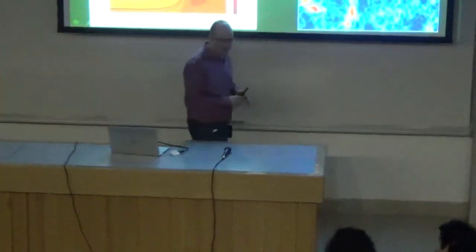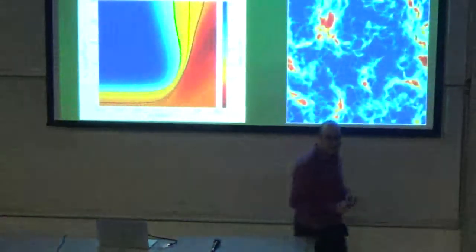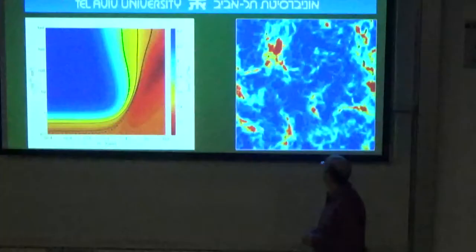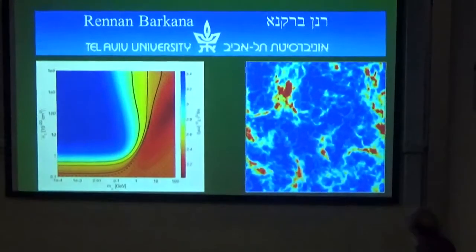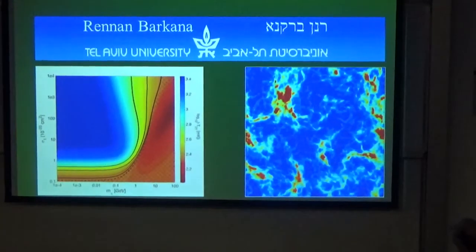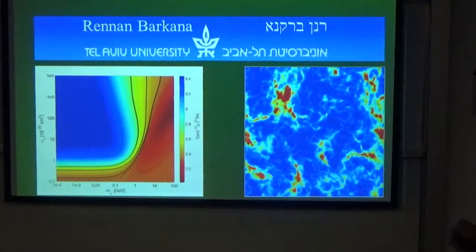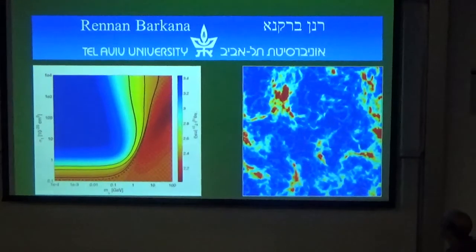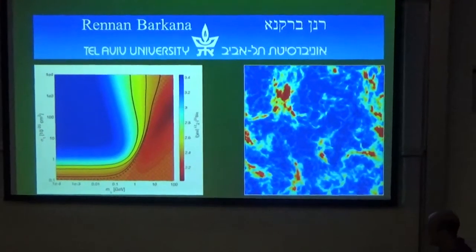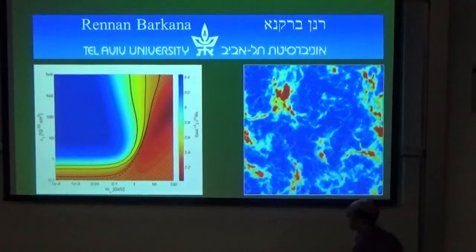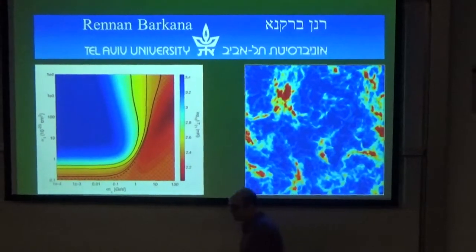He will tell us today about new types of searches for dark matter using 21cm signals. So today I will tell you about the possibility that maybe the dark matter has been revealed by searching for the first stars in the universe.